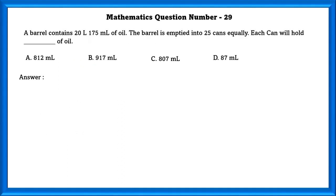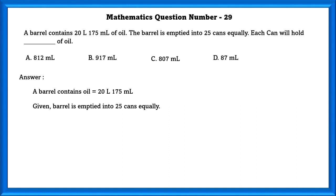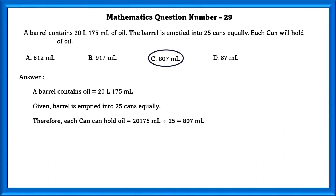Mathematics question number 29. A barrel contains 20 liters 175 ml of oil. The barrel is emptied into 25 cans equally. Each can will hold a certain amount of oil. The barrel contains 20 liters 175 ml, which is 20,175 ml. Therefore each can holds 20,175 ml divided by 25, which is equal to 807 ml.